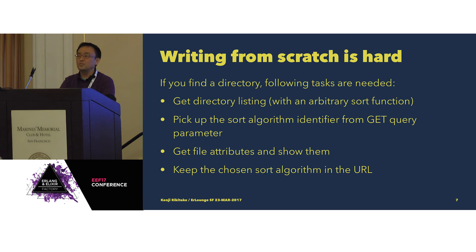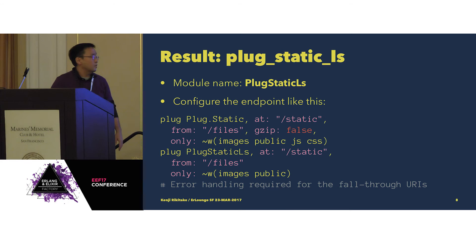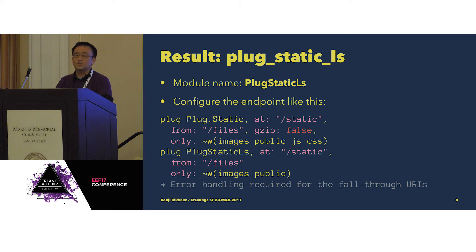So, the result: I actually made my own plug module, mostly copied from Procstatic. What I do is exactly what I described — first I put Procstatic in front so that static files are served first, and next, if it isn't a file, it will analyze the path and show the directory listing instead.